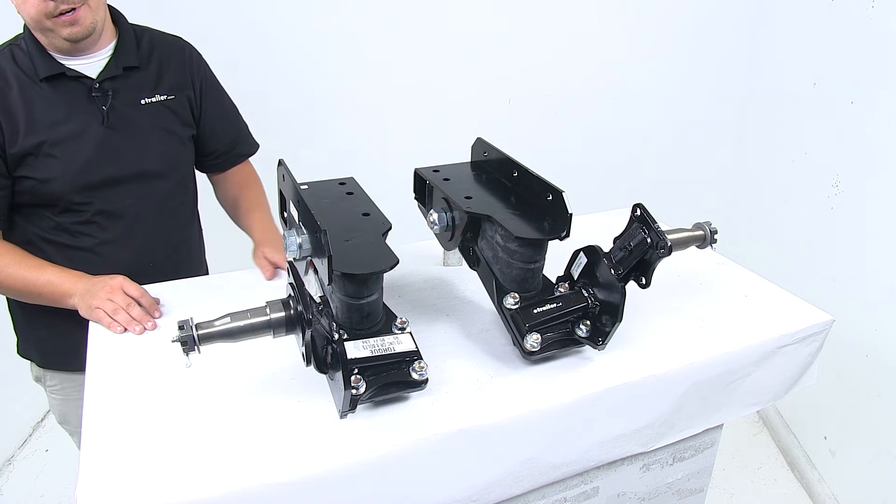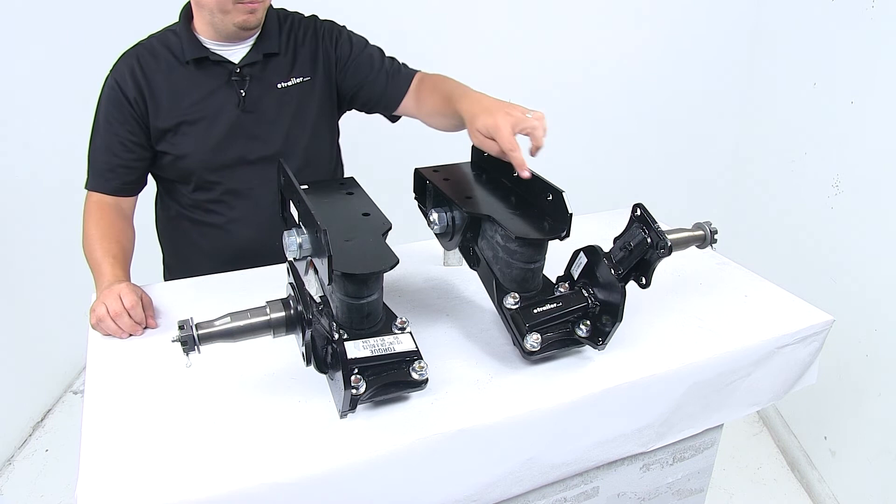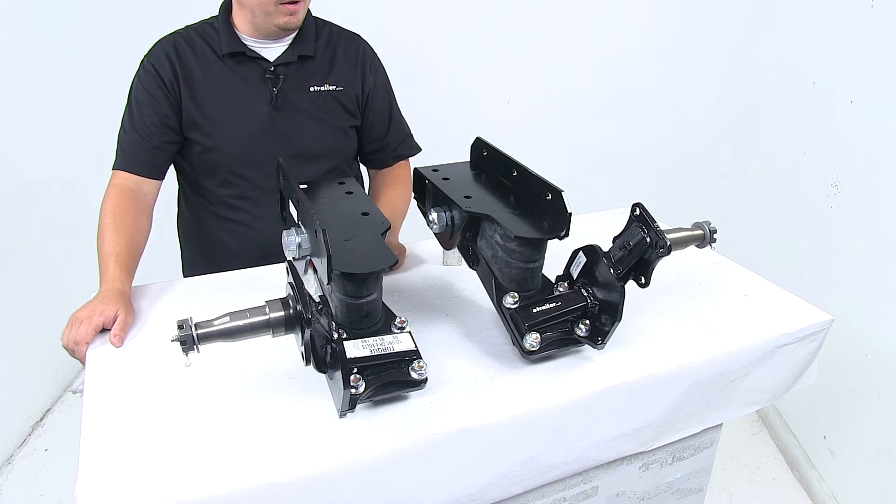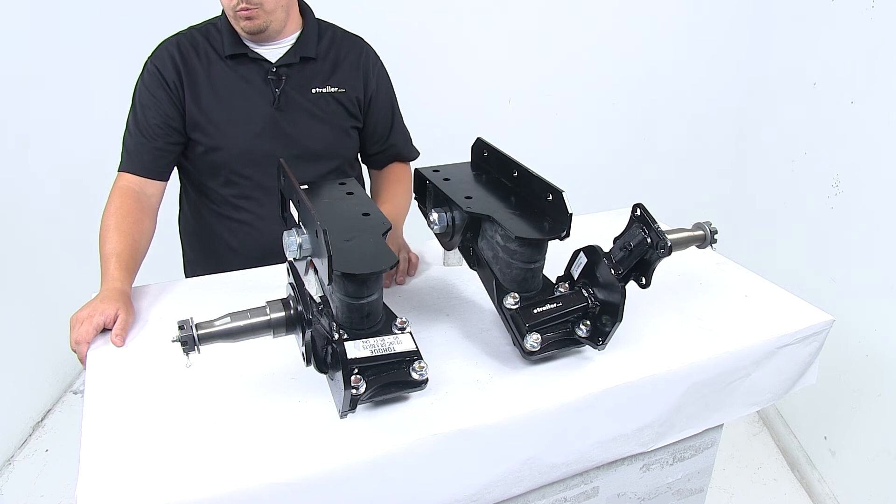They're easy to install and align. They bolt or weld to your trailer's frame. We do have the pre-drilled bolt holes on the unit. Mounting hardware to get them attached to the frame is not included, so that will need to be picked up separately. But you can bolt these onto your trailer frame, or you can weld them onto your trailer frame.